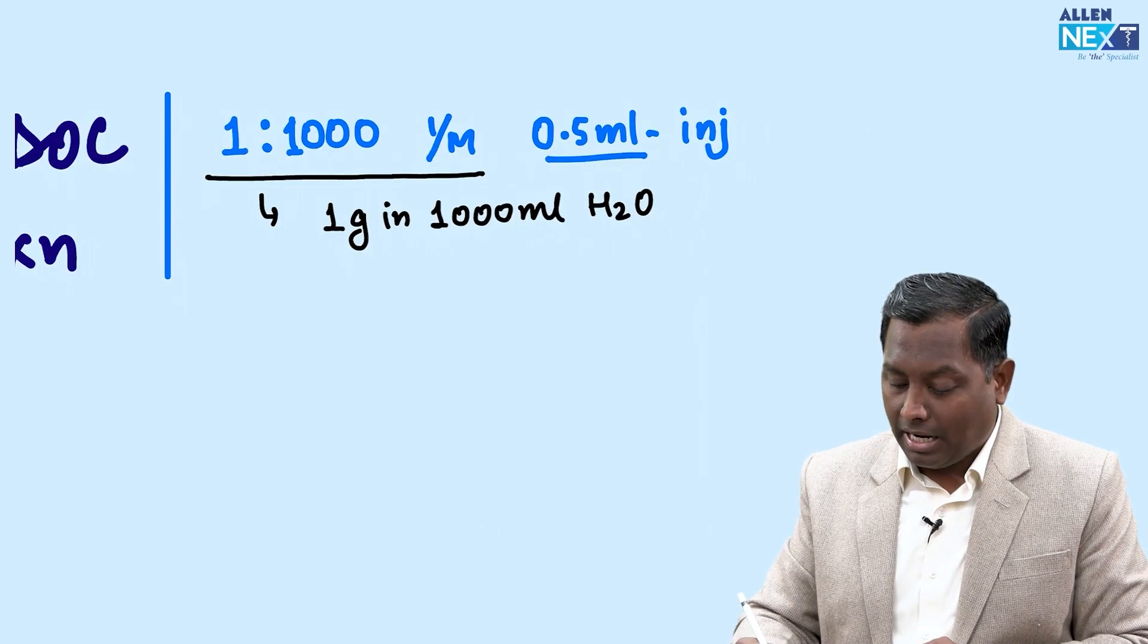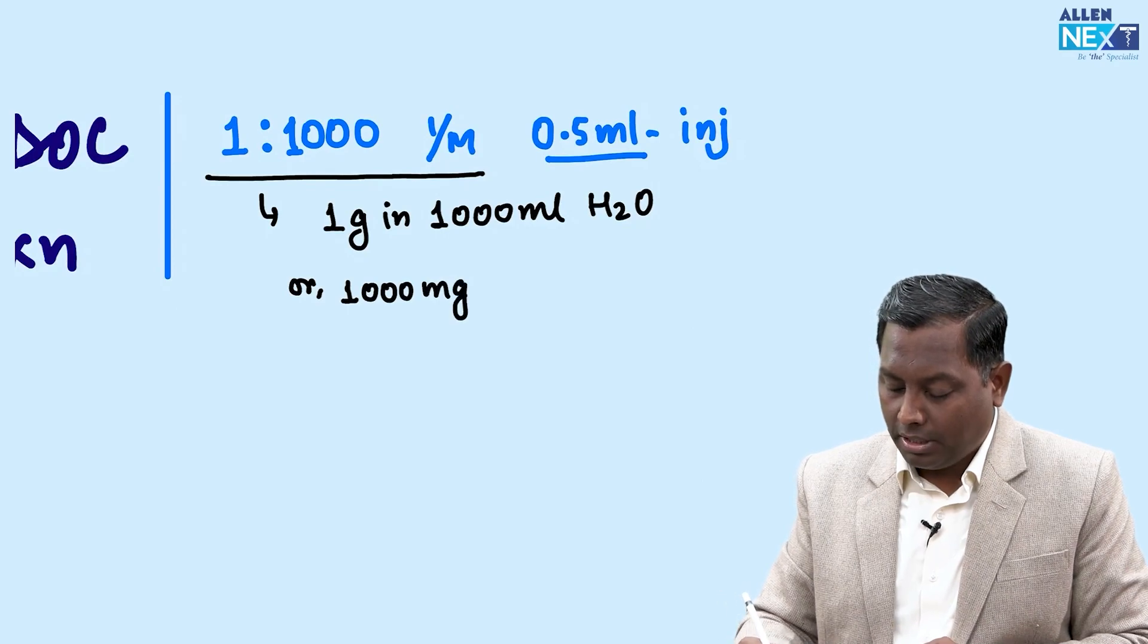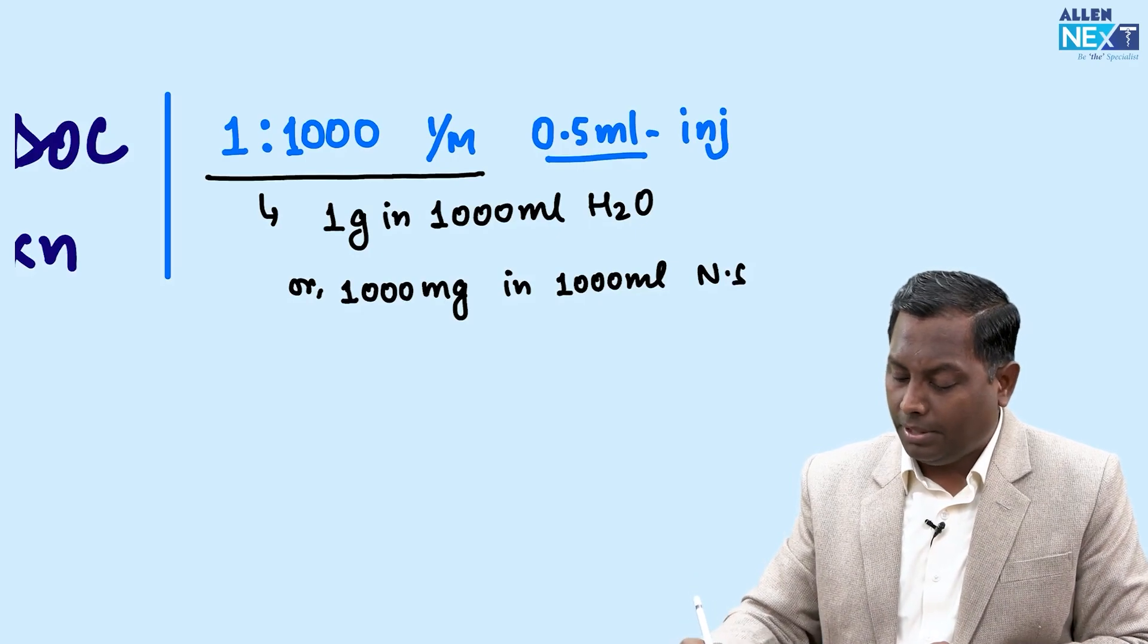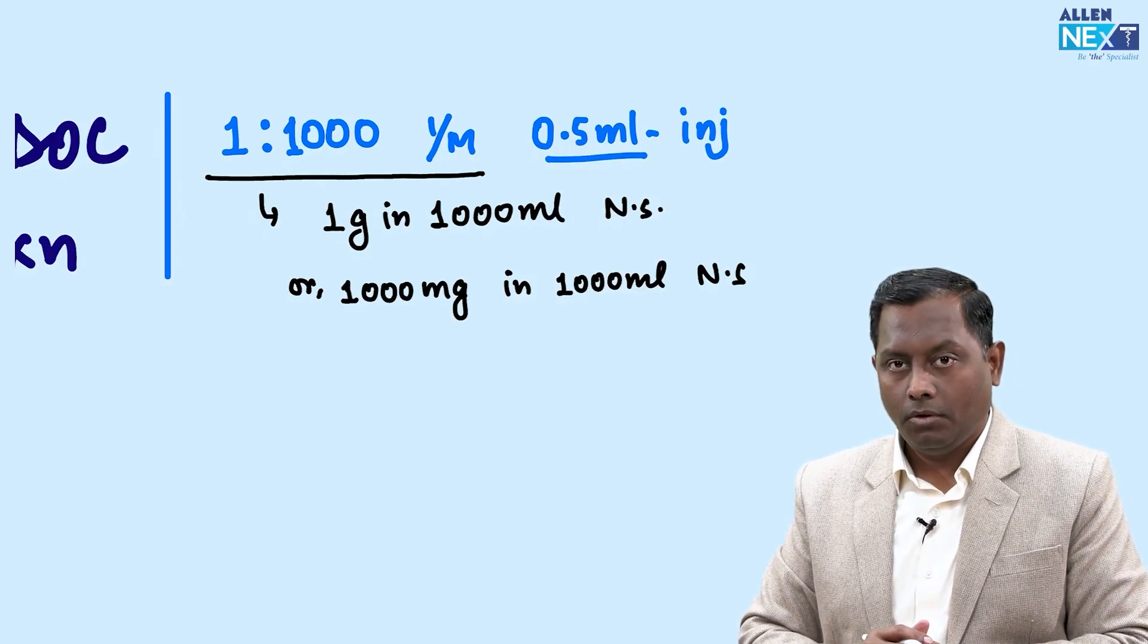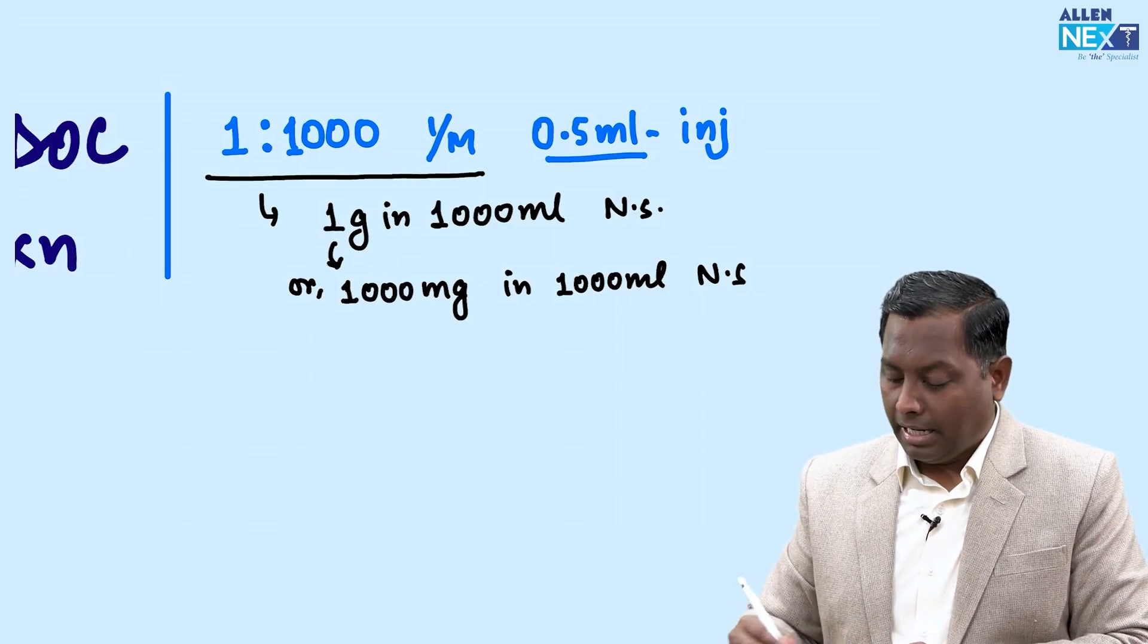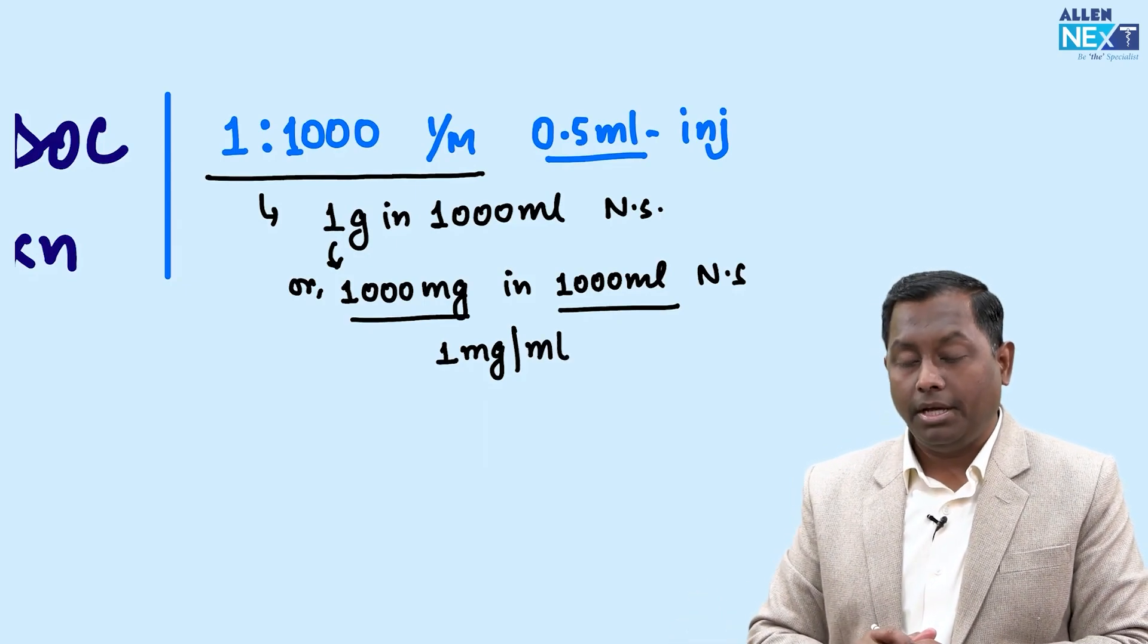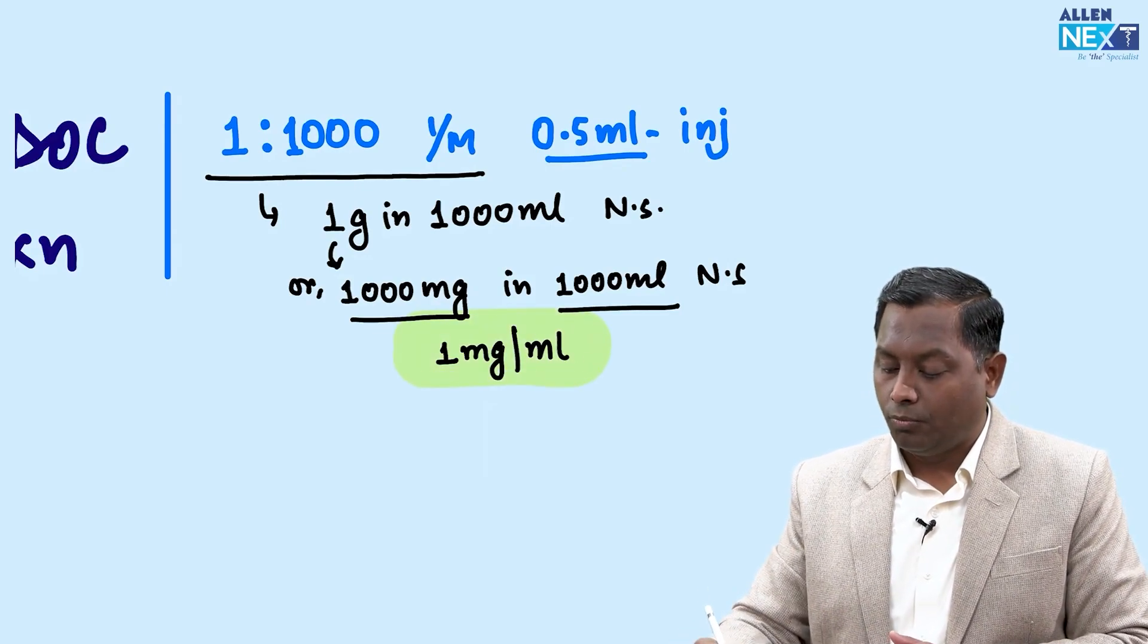Can I also write 1 gram as 1000 milligrams? So we can say 1000 milligrams in 1000ml NS. If it's 1000 milligrams in 1000ml, the concentration will be 1 milligram per ml. From this concentration of 1mg/ml, we will be taking 0.5ml.